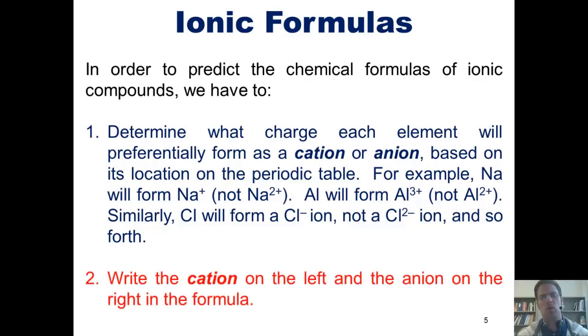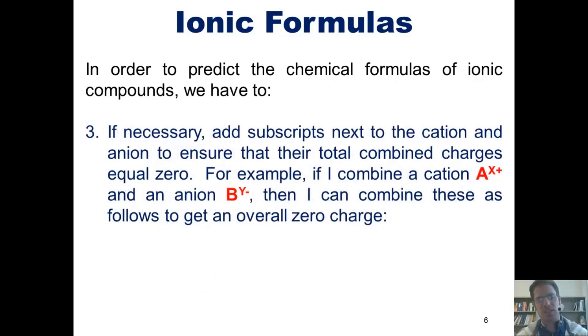Step two, write the cation on the left and the anion on the right in the formula. And step three, if necessary, add subscripts next to the cation and anion to ensure that their total combined charges equal zero. For example, if I combine a cation A with a charge of plus x, and an anion B with a charge of minus y,